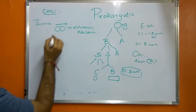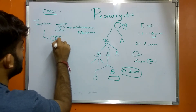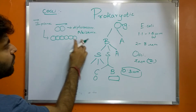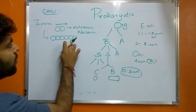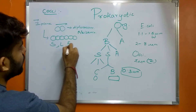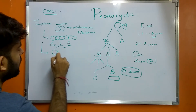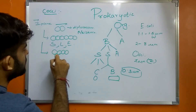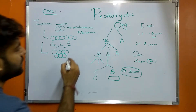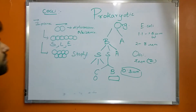Cells that continuously divide in only one plane form a chain. The examples for this are Streptococcus, Lactococcus, and Enterococcus. They also form a cluster or grape-like clump, and the example of this is Staphylococcus.